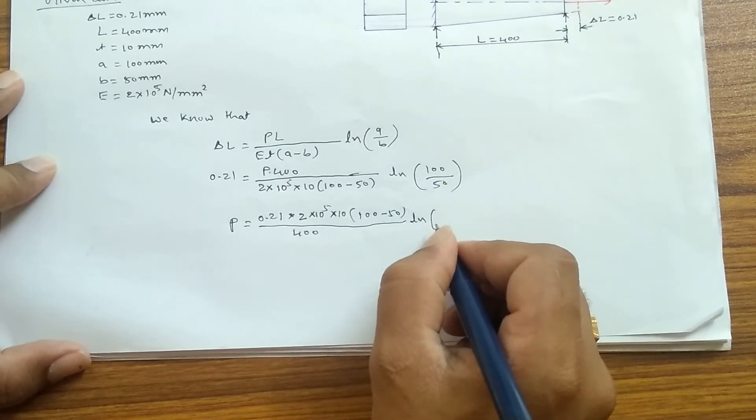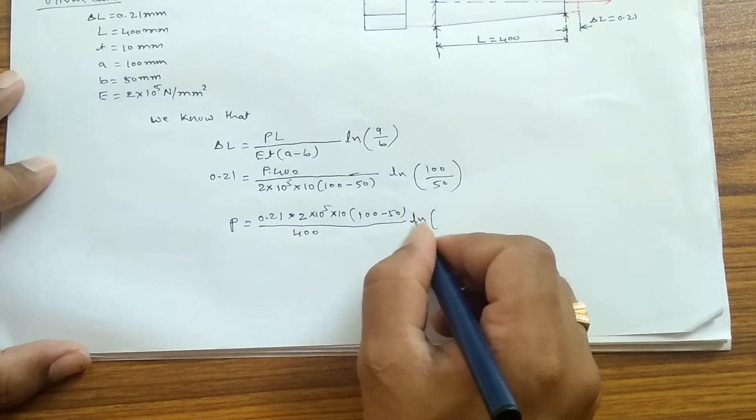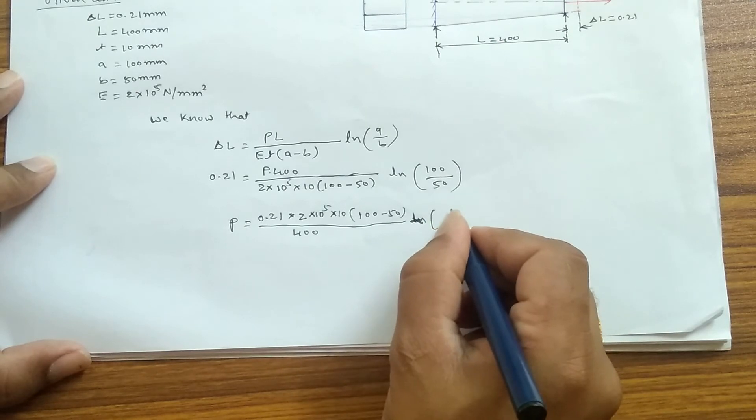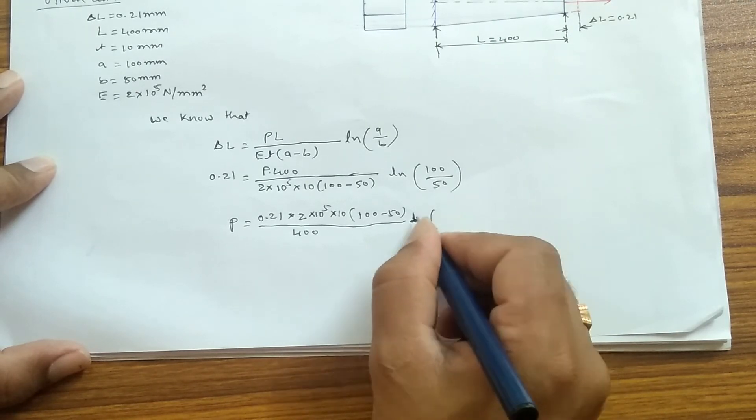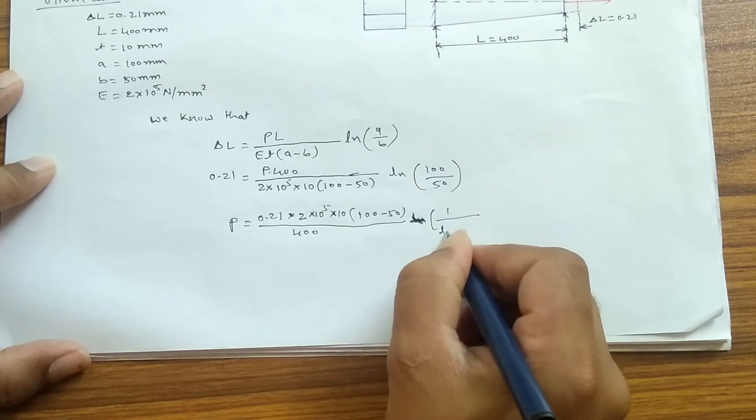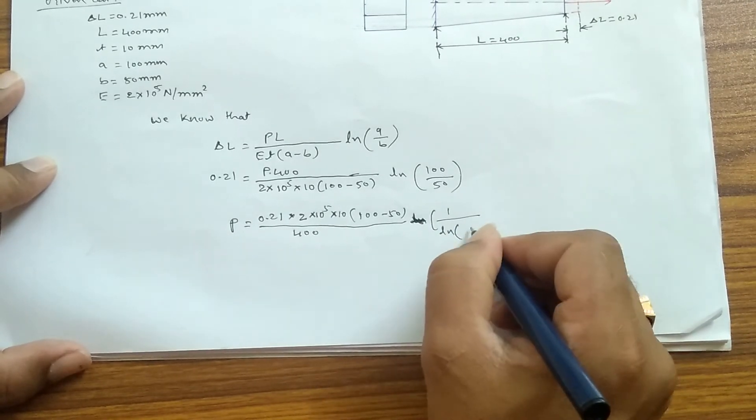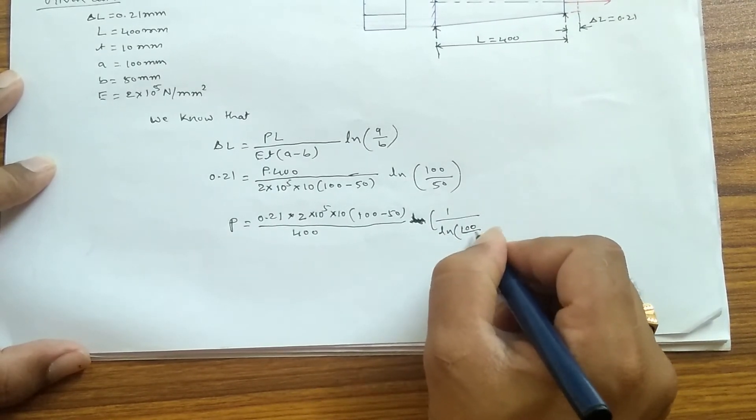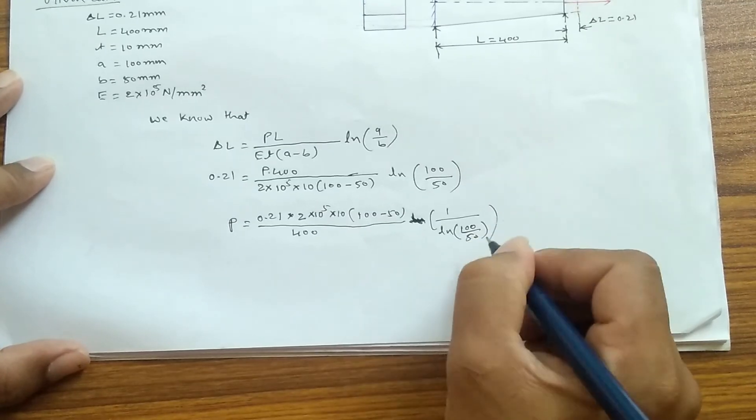So 400 comes down. And what is left? So ln of—sorry, this has to come down. So it's ln of 100 by 50.